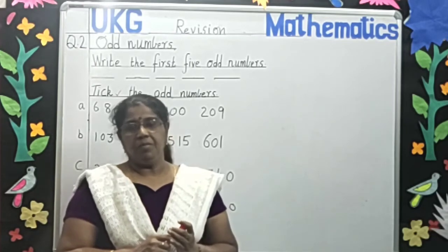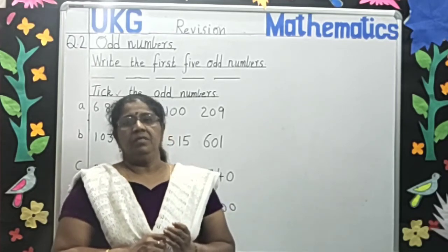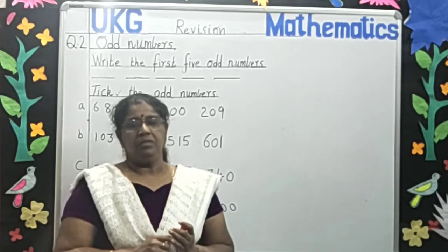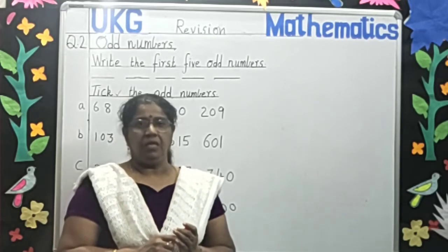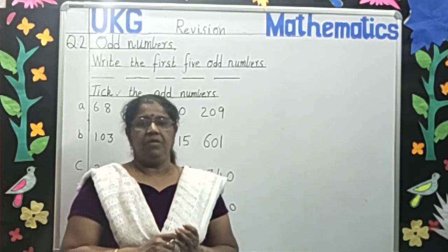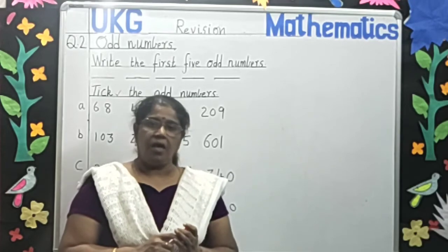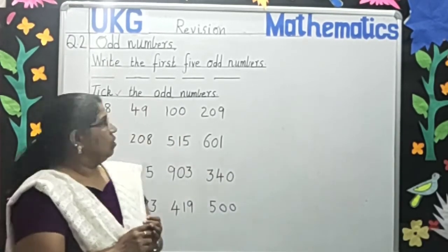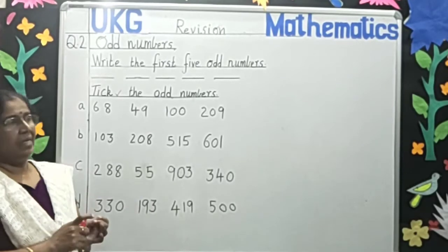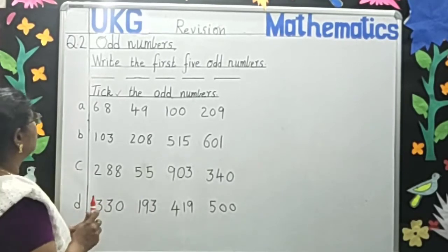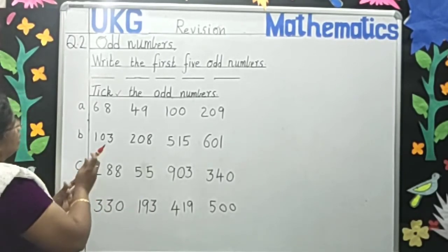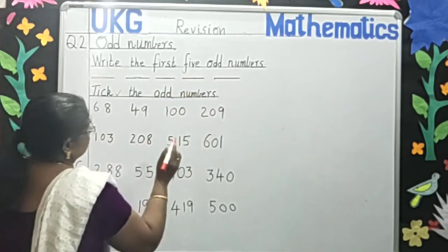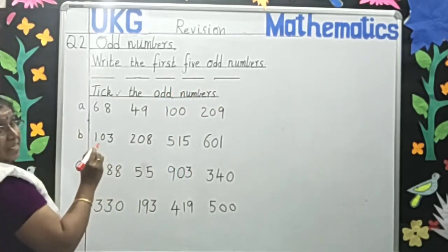What are the odd numbers? The numbers that are ending with 1, 3, 5, 7, 9 are the odd numbers. Now come on children, let's start. Write the first five odd numbers. What are they children?